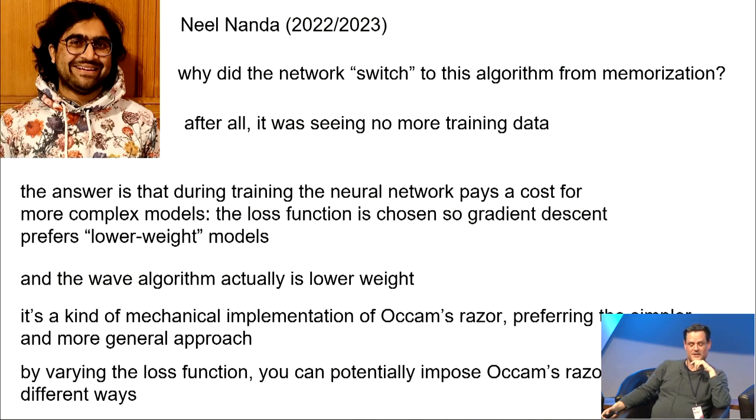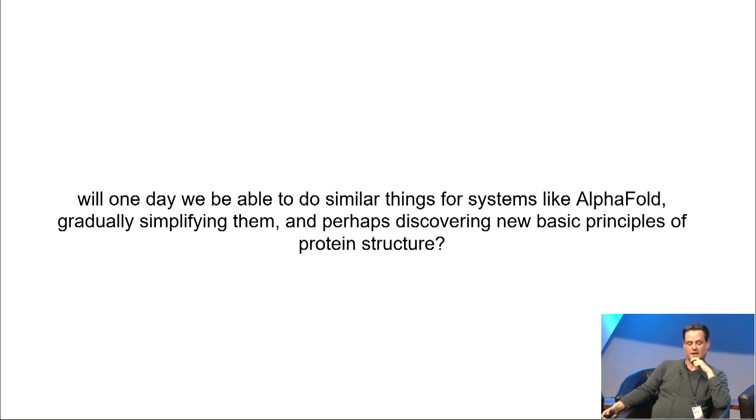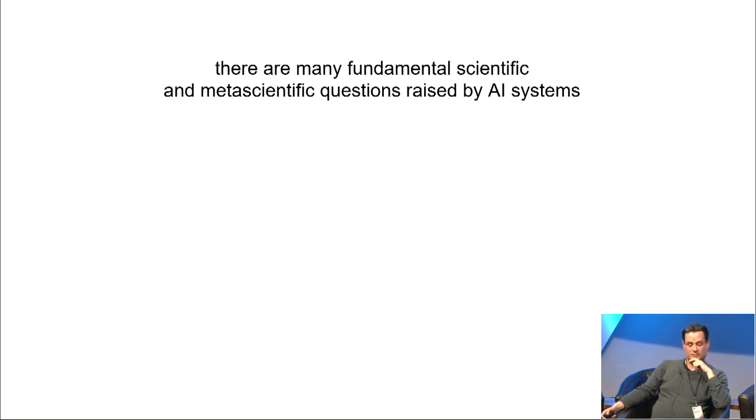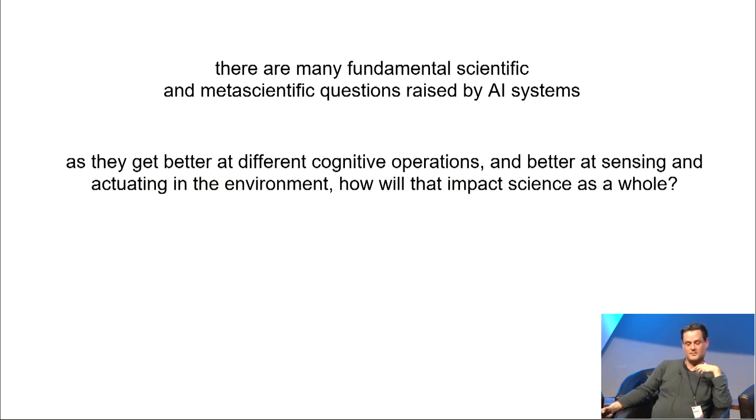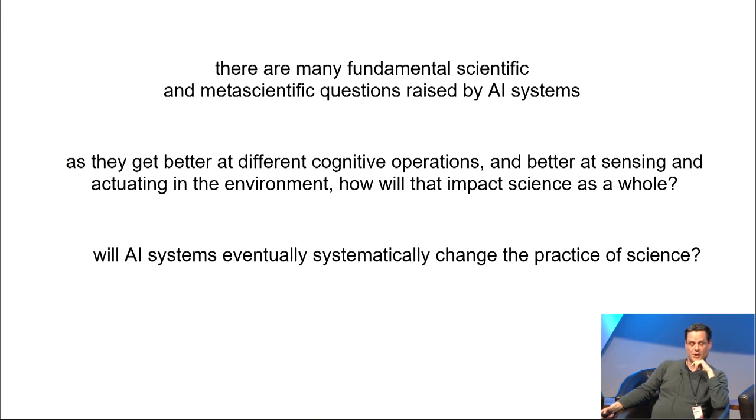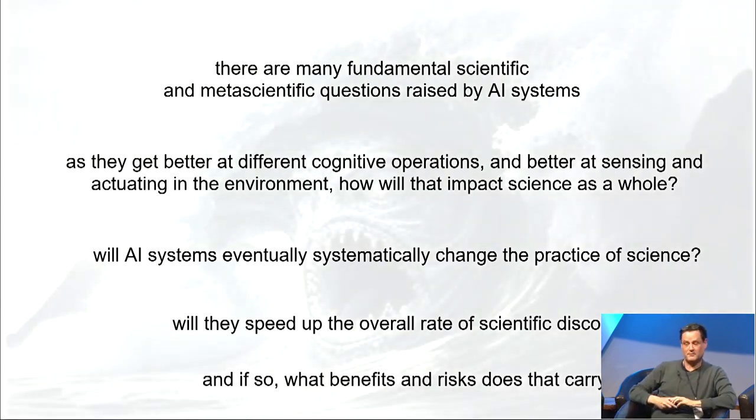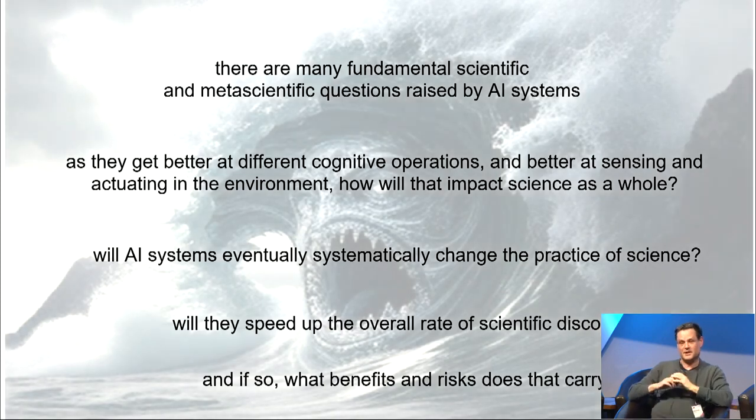So by varying the loss function, you can potentially impose this kind of Occam's razor idea in many different ways. So I wonder whether one day we'll be able to do similar things for systems like AlphaFold, gradually simplifying them and perhaps discovering new basic principles of protein structure. That's everything I wanted to say. There are, I think, many fundamental scientific and meta-scientific questions raised by AI systems. As they get better and better, both at doing cognitive operations and sensing and actuating in the environment, how is that going to impact science as a whole? Are they eventually going to systematically change the practice of science? Will they speed up the overall rate of scientific discovery? And if so, what benefits and risks does that carry? Thank you very much and my apologies for going a couple of minutes over.